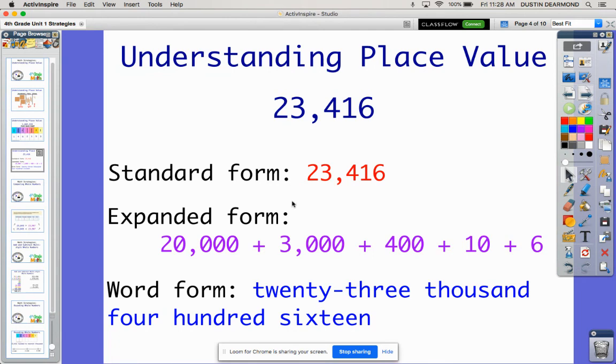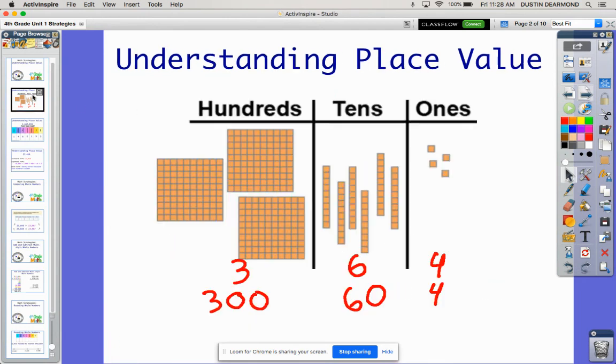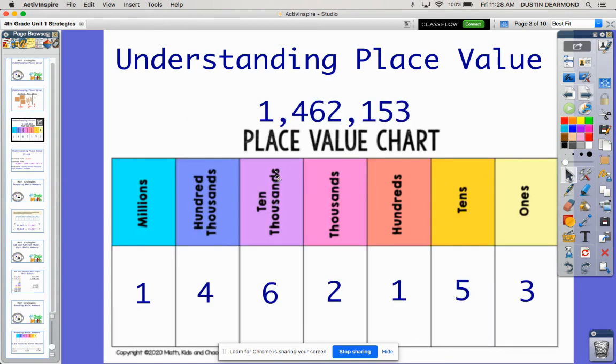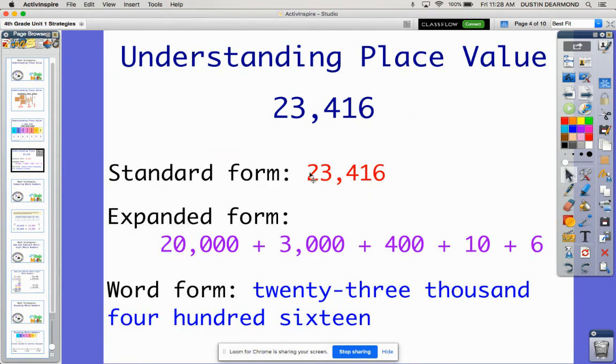So in your first lesson, you're going to be taking what you've learned about place value, about the different groupings of ones, tens, hundreds. You're going to expand that on out all the way up to the millions place. And you're going to do that by showing it in standard form, expanded form, which is again the value of each digit, and then word form.